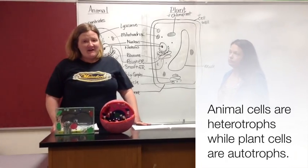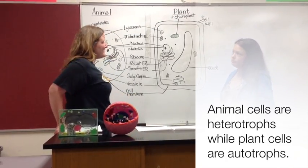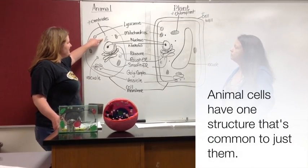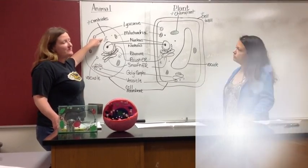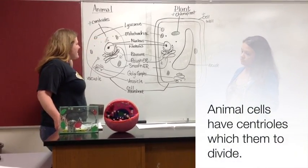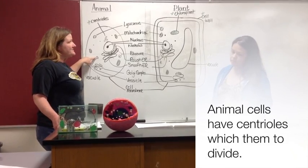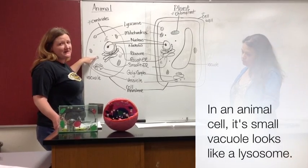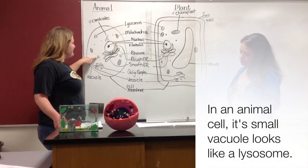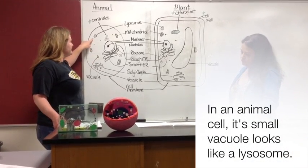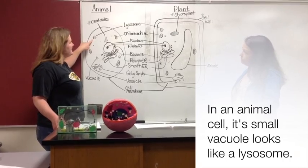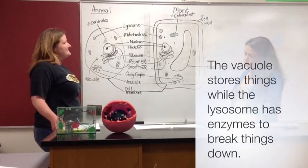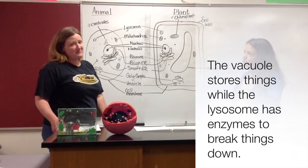Animal cells have one structure that is common to just them — they have centrioles, which help the cell to divide, and we'll talk about that more later. They also have vacuoles just like a plant cell, but remember that the vacuole in an animal cell is going to be very, very small, and it can often be mistaken for a lysosome because they look very similar. The difference is the vacuole stores things, whereas the lysosome has enzymes in it to break things down.